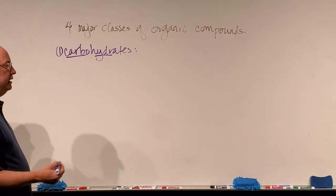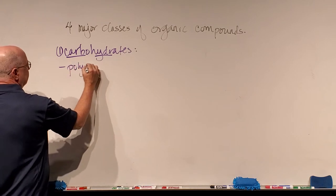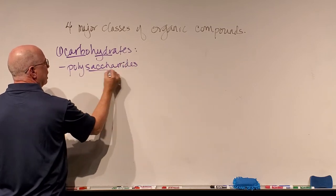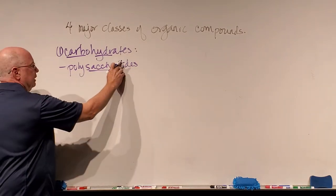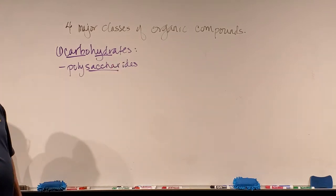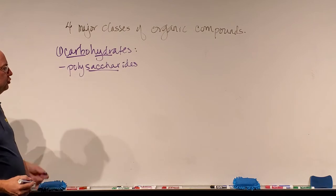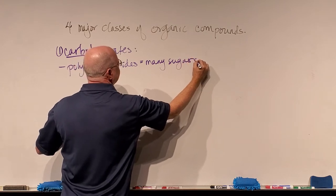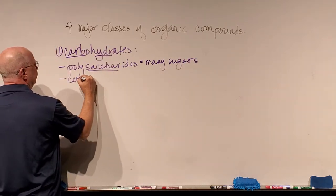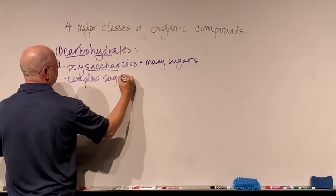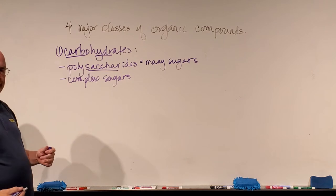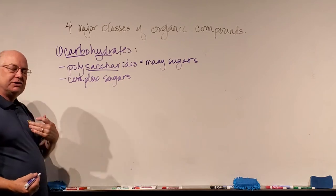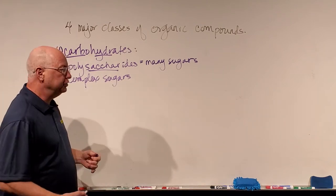Carbohydrates go by several different names. They are also called polysaccharides. 'Sacchar' means sugar in some Middle Eastern language — it almost looks like the word sugar. So polysaccharides simply means 'many sugars.' Another way to say the same thing is to call them complex sugars. Now, a little bit of chemistry background for some of this information.